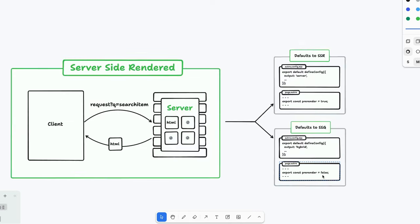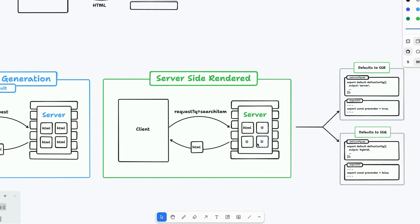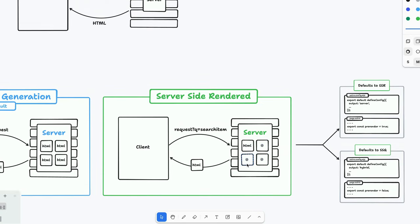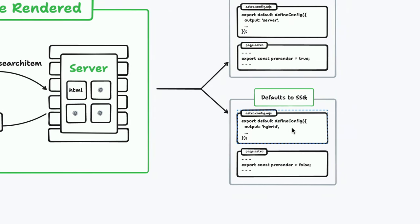Just to walk through that one more time: by default, if you don't do anything, when you run npm run build it builds ahead of time and sends the HTML to the server. If you want to server-side render — some more dynamic loading as people come to certain routes — you can add an adapter, which allows you to server-side render some or all of your site. If you want all of it, use output server. If you want it primarily static but with a route or two server-side rendered, set output to hybrid and prerender to false on individual routes.